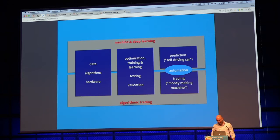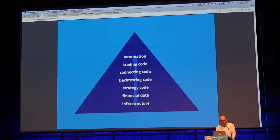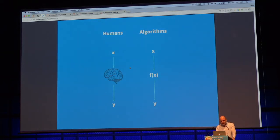We speak typically of automated algorithmic trading. This chart structures what we do in algorithmic trading at a rather abstract level. All the developments we see in AI influence every single layer — from the infrastructure to how we deal with financial data, how we formulate strategies, and backtesting code. When we think of a human trader, back in the days they used to read financial papers, look at Bloomberg or ICON terminals, and then decide to trade. To a large part, this can be replaced by algorithms.